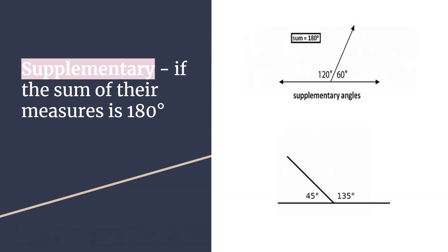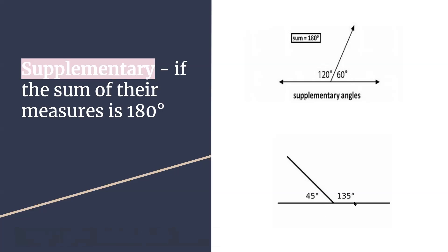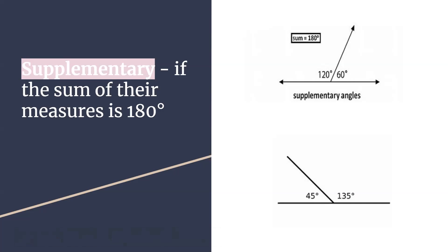The opposite of that, or the other vocabulary word we're going to focus on, is supplementary — when the sum of their measures is 180 degrees. This is the straight line that we talked about yesterday. If it's a straight line, it's 180 degrees. So these are both examples of supplementary angles: 120 plus 60 is 180, and 45 plus 135 also equals 180. If it was something like 120 plus 50, which only equals 170 degrees, then it would not be a supplementary angle.